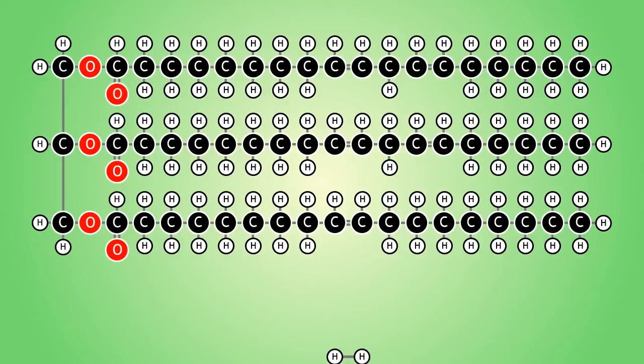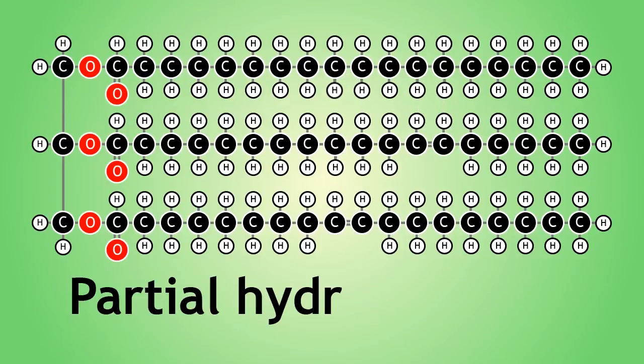In the production of margarine, only some of the double bonds of the polyunsaturated vegetable oils are hydrogenated. This is called partial hydrogenation.